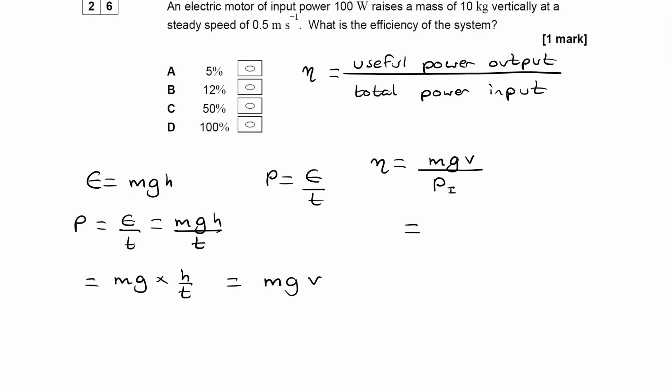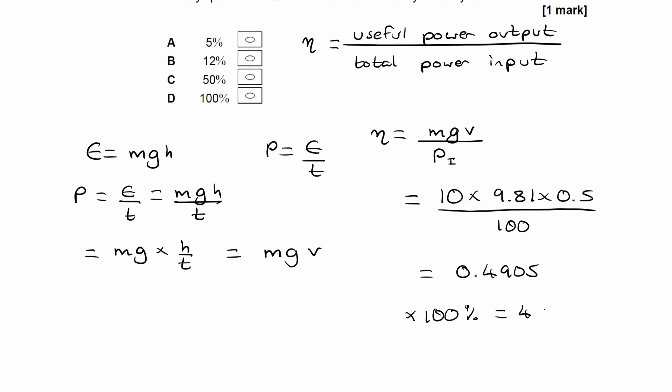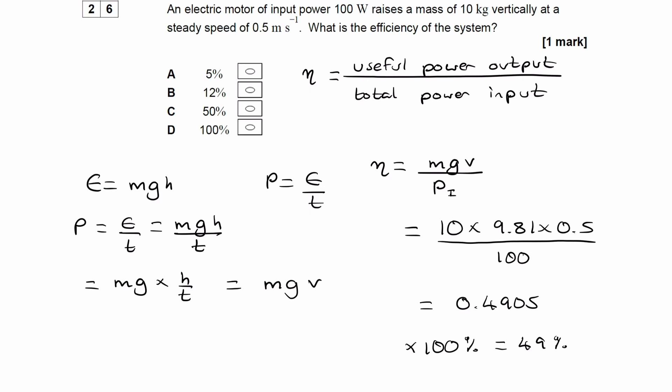So let's put in our numbers now. So the mass is 10, g is 9.81, v is 0.5. And then we divide this whole thing by 100, and we end up with 0.4905. Now, if we times that by 100 to convert it to a percentage, we end up with about 49%. And that would be approximately C.